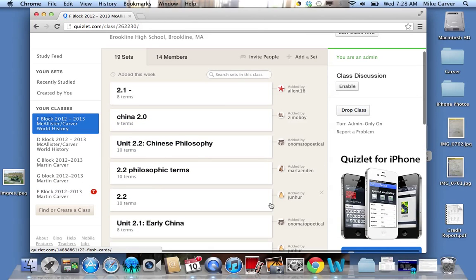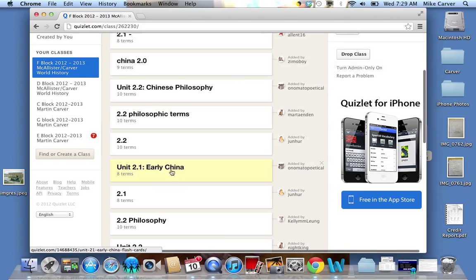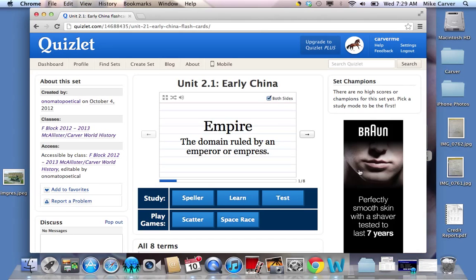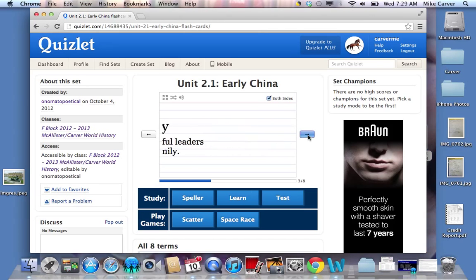Here I can see all of the students in class who have created Quizlet sets, who have done 2.1 and 2.2. Those are the two sets of flashcards that you need to combine. So I'm going to click on someone's 2.1, Onomatopoetical. Here we can see those flashcards. Hopefully you've been using them to study.